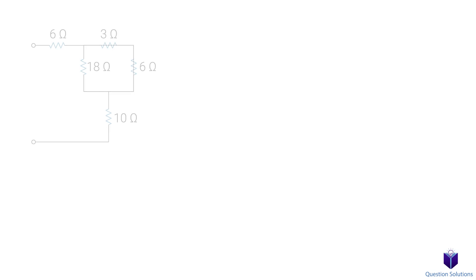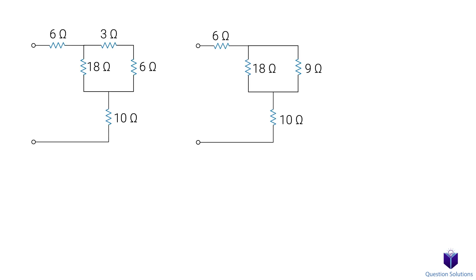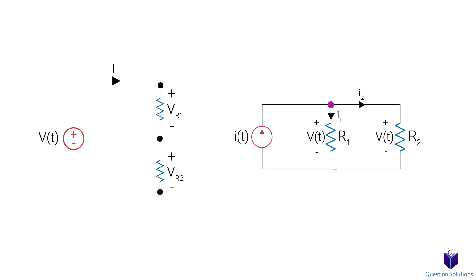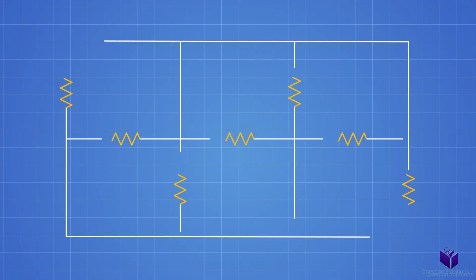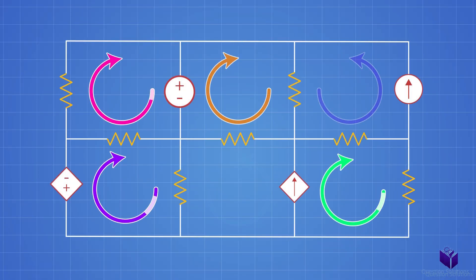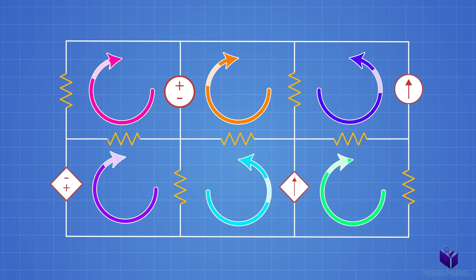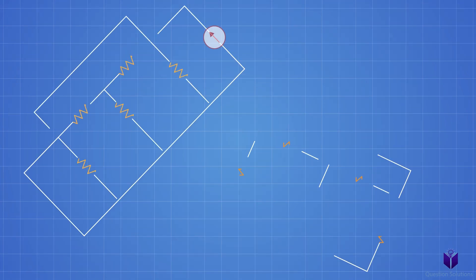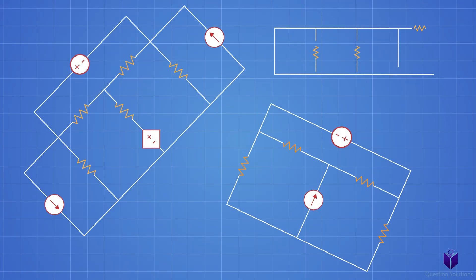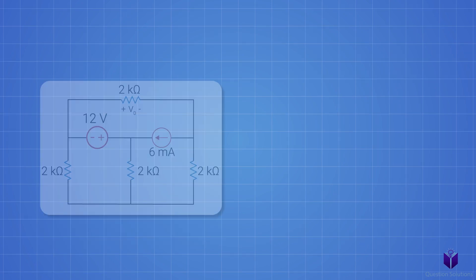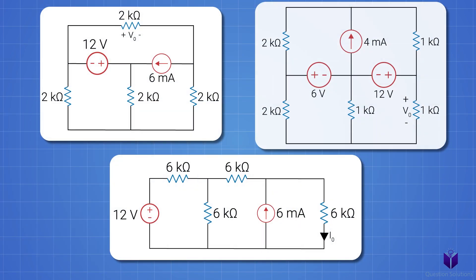Most of the time, circuits can be solved just by combining resistors in parallel or series, and using voltage or current division when only a single source is present. But that doesn't mean you can't use any other method you want. For example, you can use mesh analysis or nodal analysis on a circuit with a single source and still get the values you want. It's totally up to you. Don't worry, all of this will make so much more sense when we cover examples, so let's get to it.